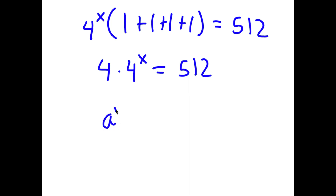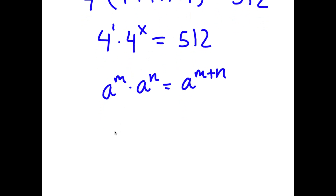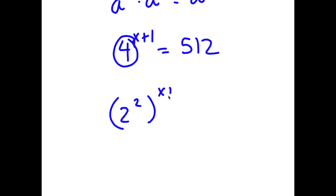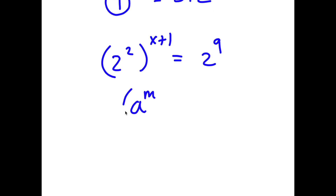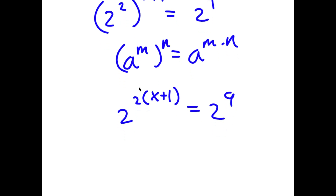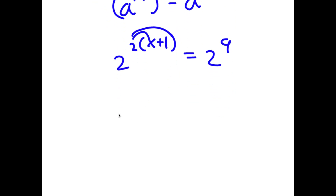Using the rule a^m times a^n equals a^(m+n), I rewrite 4 times 4^x as 4^1 times 4^x equals 4^(x+1) equals 512. Since 4 equals 2 squared and 512 equals 2^9, I have (2 squared)^(x+1) equals 2^9. Using the power rule, this becomes 2^(2(x+1)) equals 2^9, or 2^(2x+2) equals 2^9.